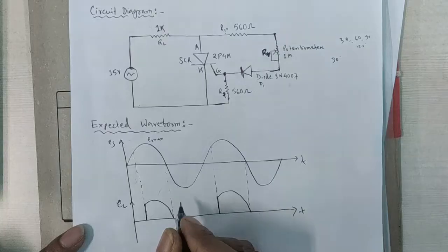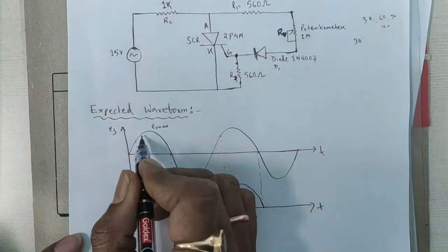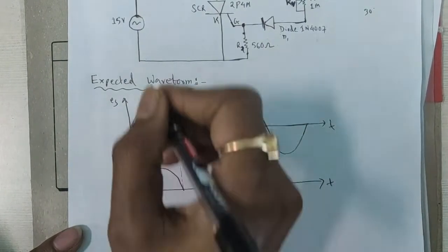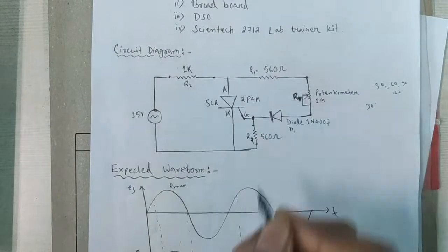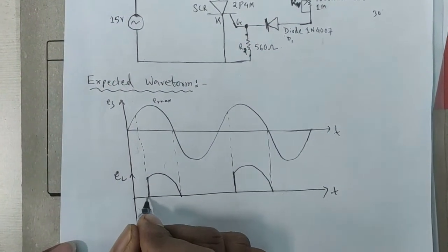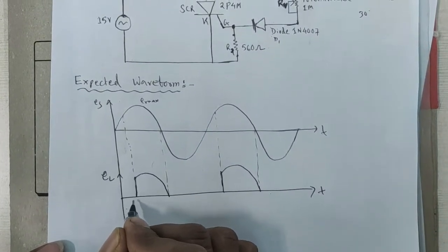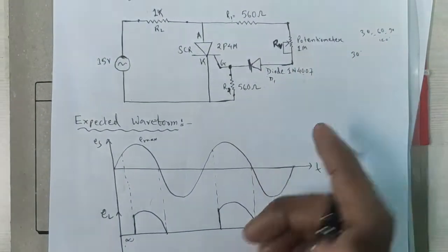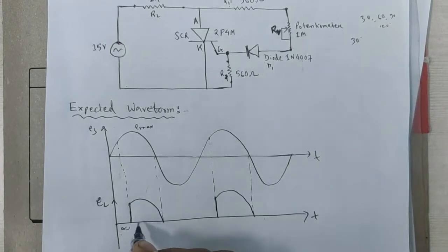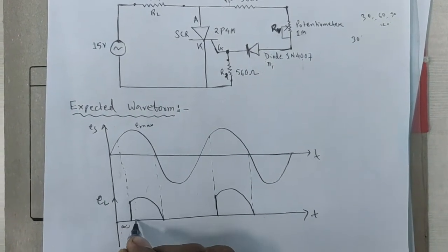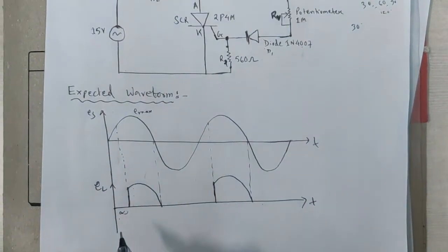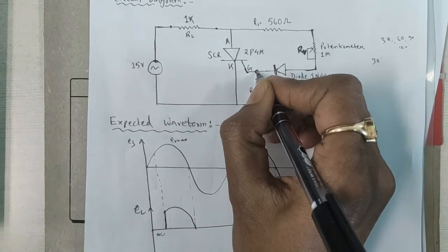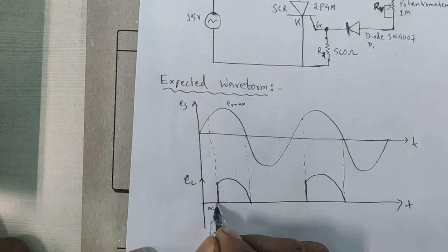This is the expected waveform of R triggering. On the input side, we have applied a sine wave. On the output side, we will get the output across the load resistance. According to the triggering angle, the output will change. As the firing angle changes, the output waveform changes. If we increase the value of the potentiometer, this angle will also increase. As the potentiometer resistance increases, it takes more time to reach the gate voltage, and the firing angle changes.